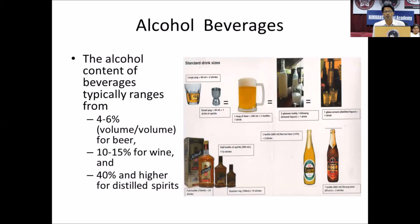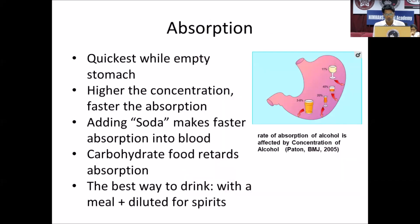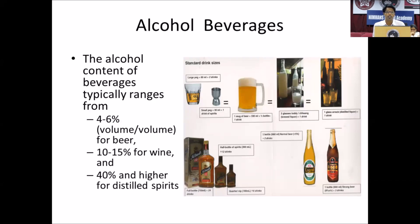Coming to different alcohol beverages: beer contains four to six percent volume-by-volume alcohol concentration, wine contains 10 to 15 percent, and distilled spirits contain 40 percent and higher. On the right side of the slide there is a diagram showing that one unit equals 30 ml of distilled spirit, and one unit equals approximately 330 ml of beer. Also, on the bottle, alcohol is labeled by proof — the proof is double the strength percentage, so 40 percent distilled spirit is 80 proof.